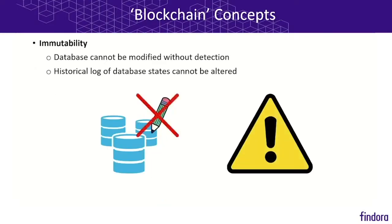Immutability. One way to characterize immutability is that the database cannot be modified without detection. Of course we would like to allow modifications to the database, otherwise it would not be very useful, but every change to the database is recorded. Immutability refers mostly to the historical log of database states, which cannot be altered. Every update to the database state triggers a new state, and the historical sequence of states cannot be deleted.